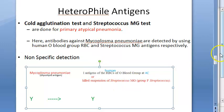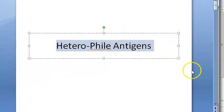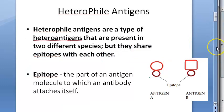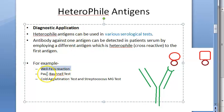Recap: Heterophile antigens are antigens that share the same epitope, so they can agglutinate with the same antibodies. Their uses include: the Weil-Felix reaction, Paul-Bunnell test, cold agglutination test, and Streptococcus MG test.